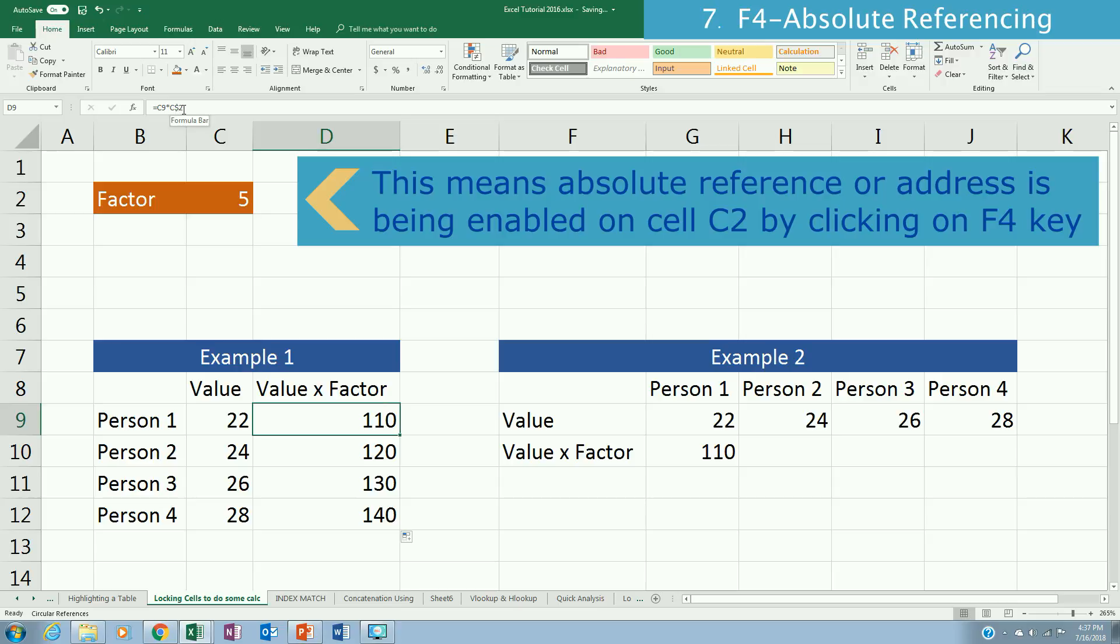So that is fixing C$2. In this case, we have to make sure that we're fixing C which is the column here. So as we move one column to the right, we don't want the factor to move to D, E, and F where there's no value for it.